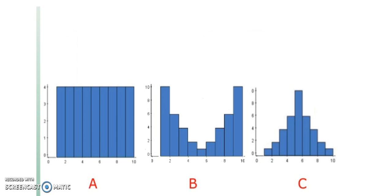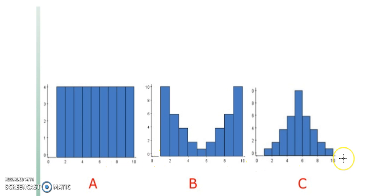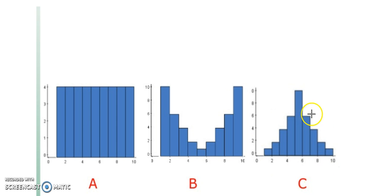Unfortunately, range isn't always the best measure of spread. Look at these three histograms — they all have a range from one to ten, so the range of all of them is nine. But if you look at them, some are way more spread out than others, and some are way more clustered together. So range isn't always the best way to look at spread.